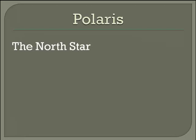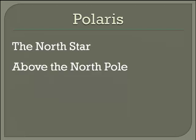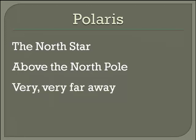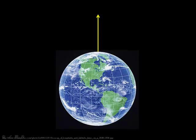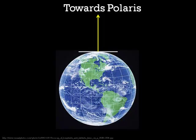Polaris is the north star. It's above the north pole and it is very, very far away. If you went to the north pole and you looked straight up, you'd be looking towards Polaris. If you measured the angle between that imaginary line and the horizon, you would see that that angle would be 90 degrees. 90 degrees is also the latitude measurement of the north pole — we say the north pole is 90 degrees north of the equator.